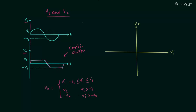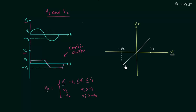I will use these values to plot the transfer characteristics for the given problem. When input voltage VI is between minus V2 and V1, the output voltage equals the input, so we have a straight line with slope equal to 45 degrees. When input voltage VI is greater than V1, the output voltage is equal to V1, so we have a horizontal plot at V1.